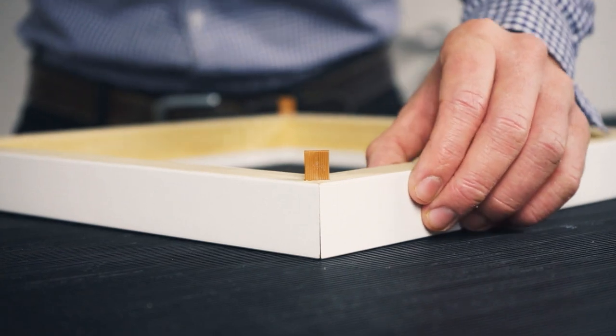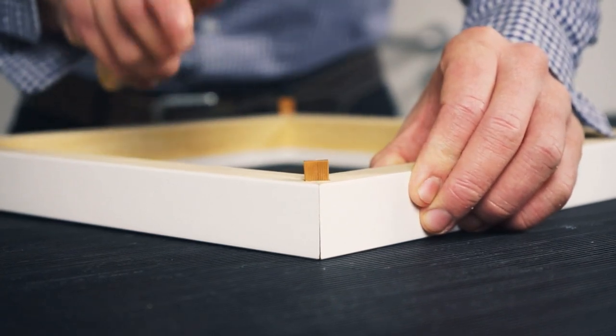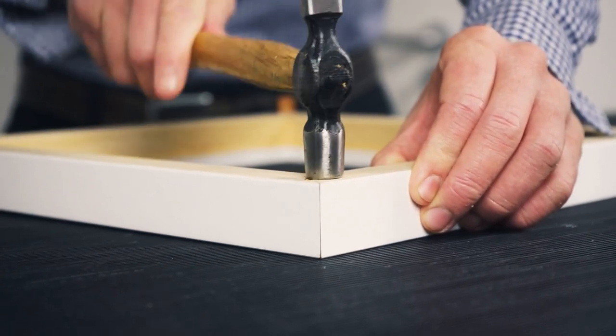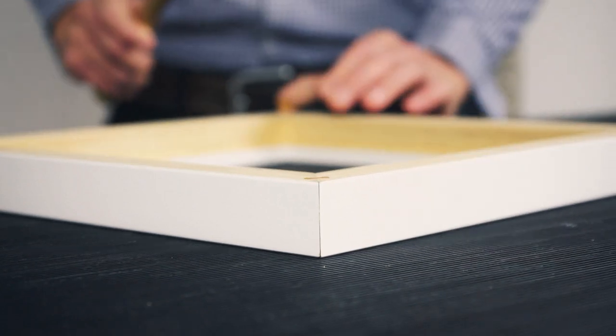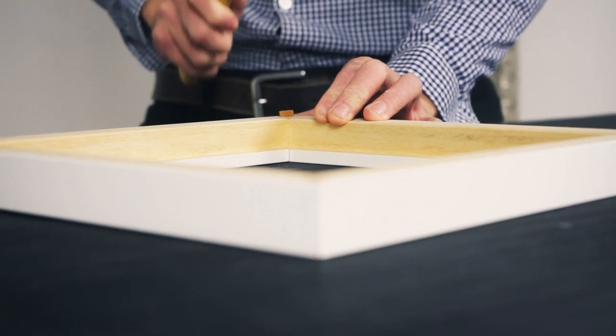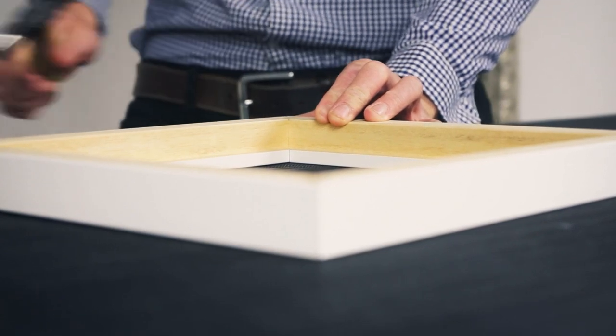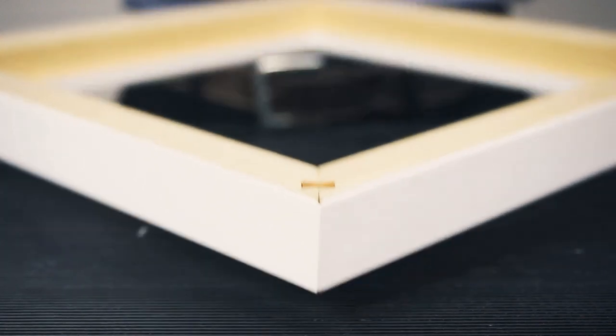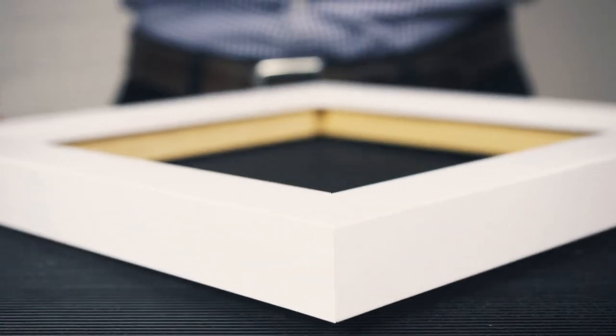Step four, once you have two separate corners you will need to join the whole frame together. Just like before, evenly spread a thin layer of glue over both corners and then lightly push the frame together. With the last two inserts, secure the whole frame together.